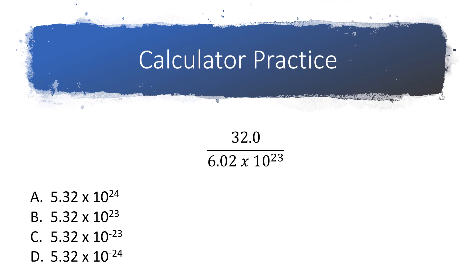OK, so here's what you need to do to enter this into your calculator. 32.0, you don't necessarily need to enter the point zero. You can, but you don't have to. So the way I would type this into my calculator is I would type in 32 and then I would hit the divide key. So 32 divide and then I'll type in 6.02 and then I'm going to hit the EE. And again, on some calculators, instead of saying EE, it's going to be EXP. And then I would type in 23 and then I would type in equals.